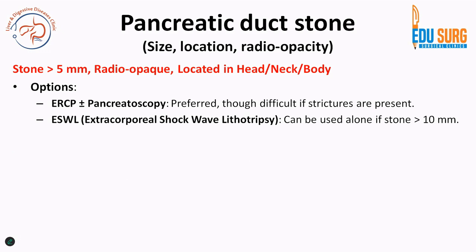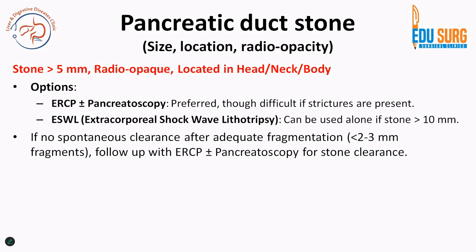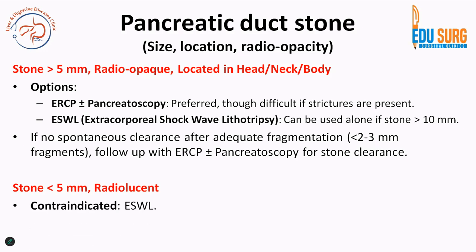ERCP plus or minus pancreatoscopy is preferred for radiolucent stones less than 5 mm. It is difficult to navigate when strictures are present, and stones usually form with a downstream stricture. For stones fragmented with ESWL where there is no spontaneous clearance, a follow-up ERCP with or without pancreatoscopy may be required for stone clearance. For stones less than 5 mm that are radiolucent, ESWL will not help and ERCP plus or minus pancreatoscopy is the option.